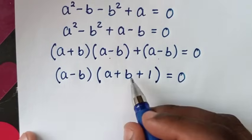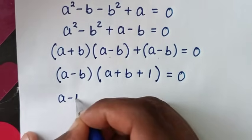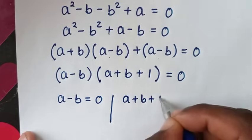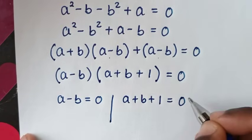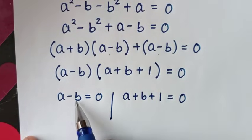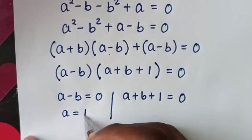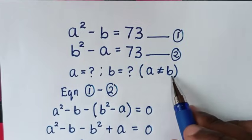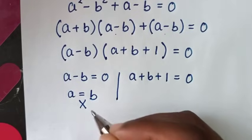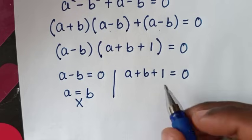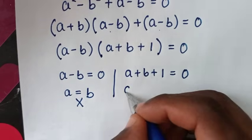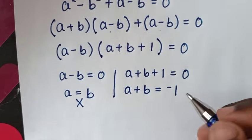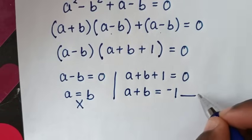From here we have two solutions: the first solution is a minus b equals 0, and the second solution is a plus b plus 1 equals 0. To solve from the first solution, a is equal to b. But the condition from our problem is that a should not equal b, so we reject this solution. We continue to solve from the second solution: taking 1 to the right side gives a plus b equals negative 1. We'll call this equation 3.